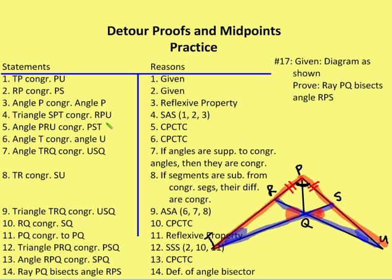I'm going to get two corresponding parts from that set of two triangles to help me prove that ray PQ bisects angle RPS. The first is angle PRU congruent to angle PST by CPCTC, and then angle T is congruent to angle U, again by corresponding parts of congruent triangles are congruent.